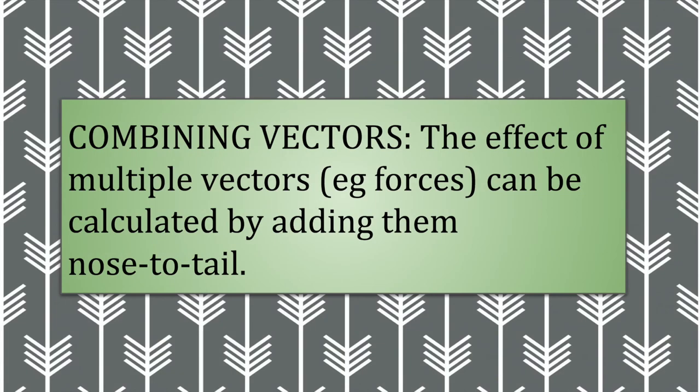When more than one force acts on an object, we can combine their effects into one vector using vector addition. The simplest method is adding the vectors nose to tail. You may be more familiar with the parallelogram rule, and that will always give exactly the same results.